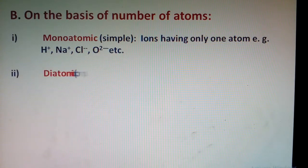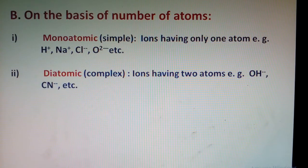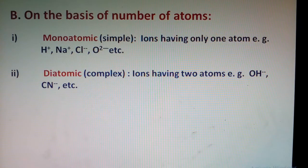Diatomic ions: as the name suggests, those ions in which there are two atoms that together bear the charge. Like hydroxide, which has one oxygen and one hydrogen atom, and the total negative charge is one unit. Similarly, cyanide, which has one carbon atom and one nitrogen, with a combined charge of one negative.